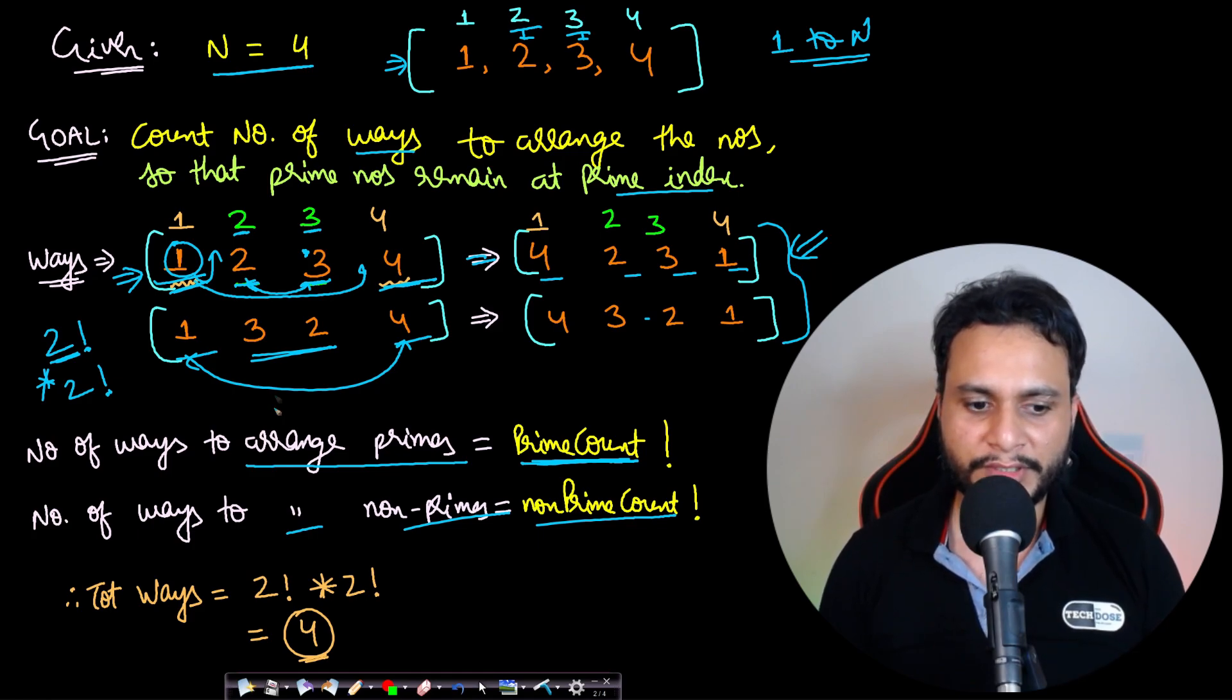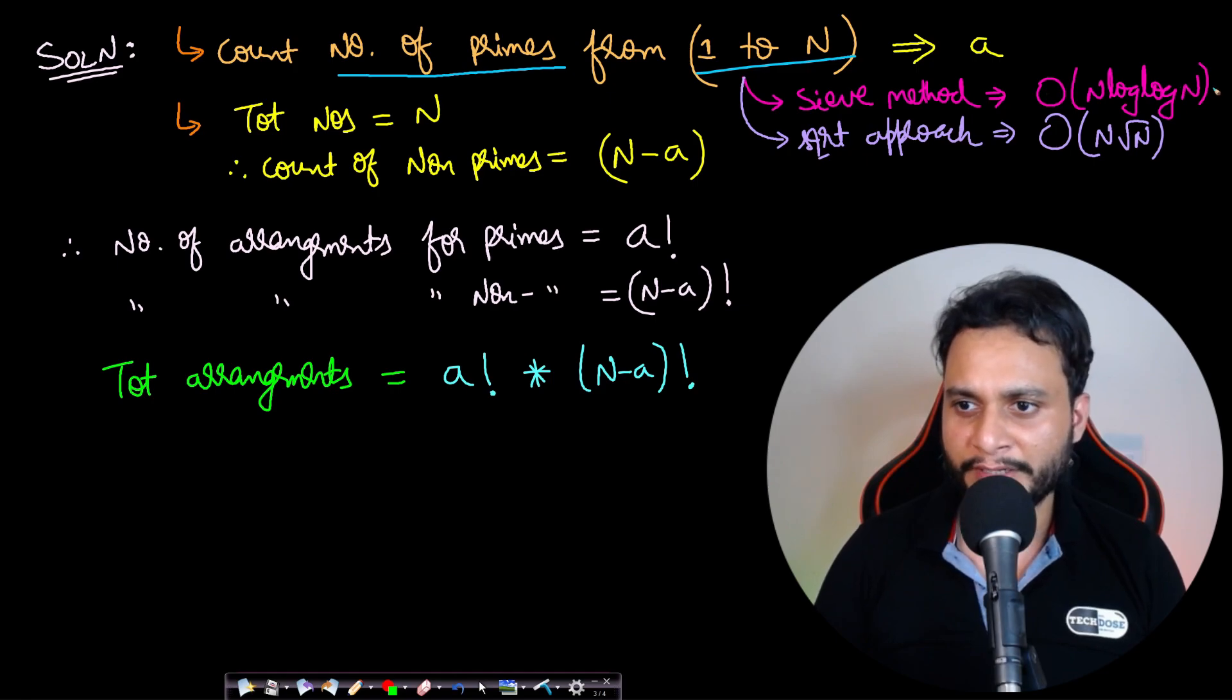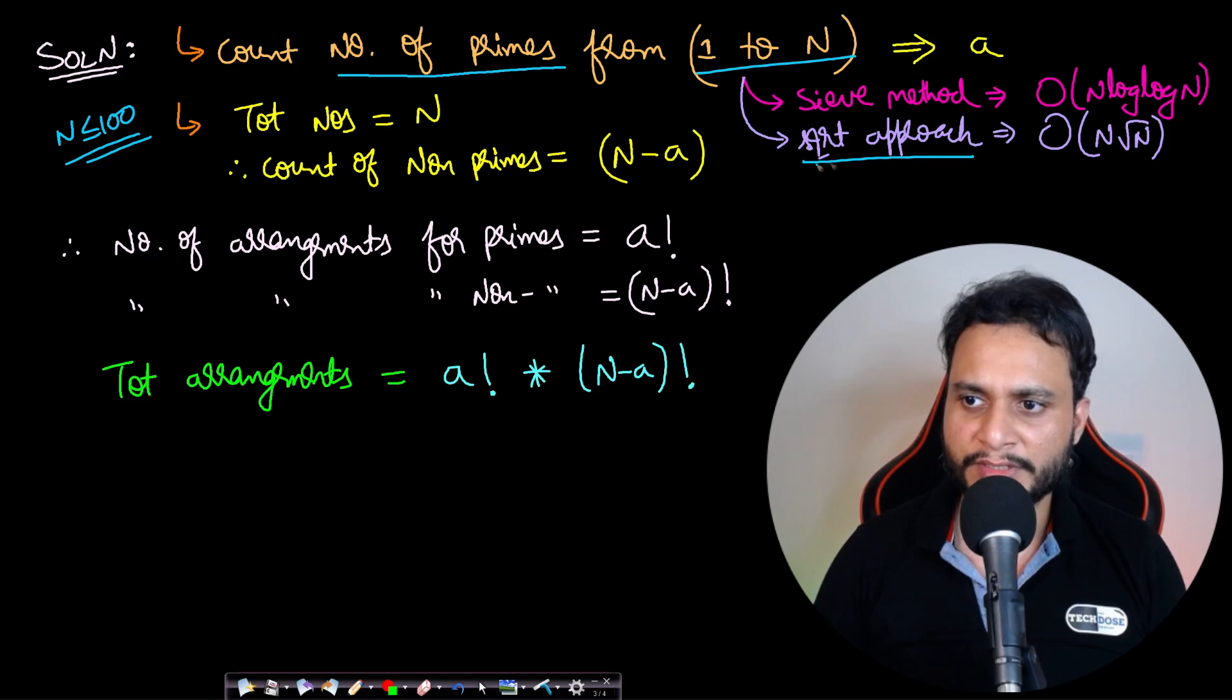The solution involves finding the number of primes from 1 to n. You can use the sieve method which is O(n log log n), or the square root approach which is simpler. The constraints say n is less than or equal to 100, so you can use the simple square root of n approach, which I've taken.